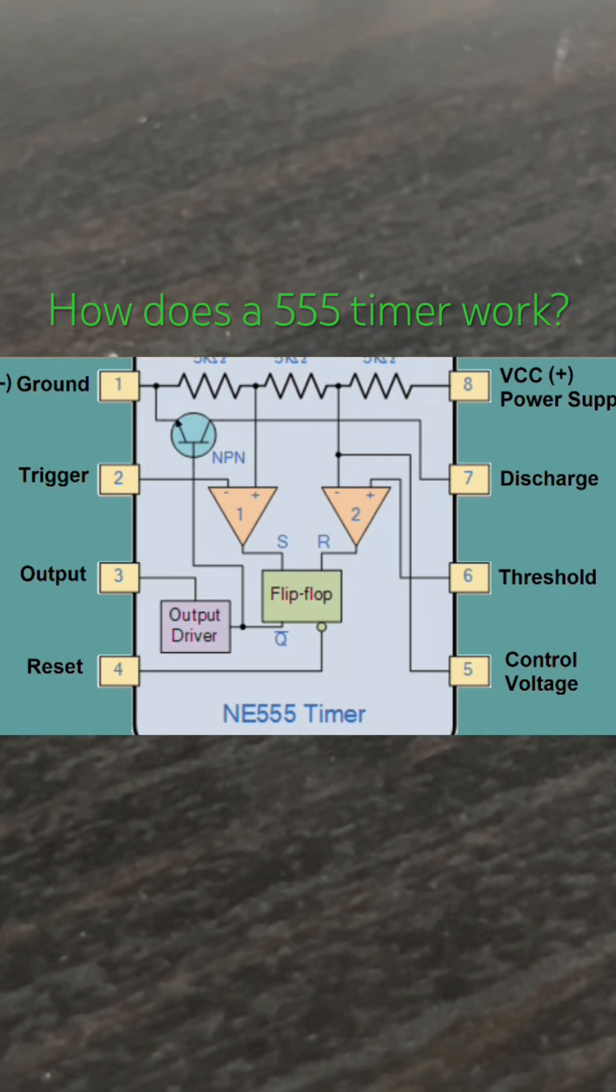Trigger detects low voltage, threshold detects high voltage. These values are then put through the internal workings of the timer and then output through the output pin.